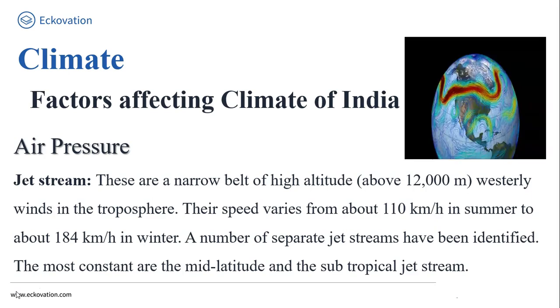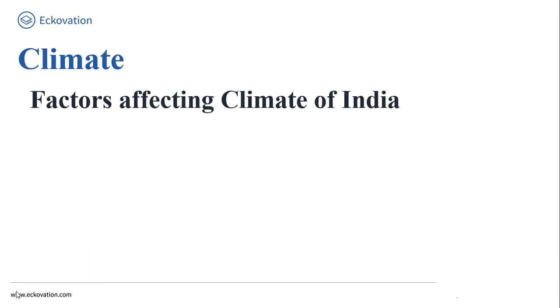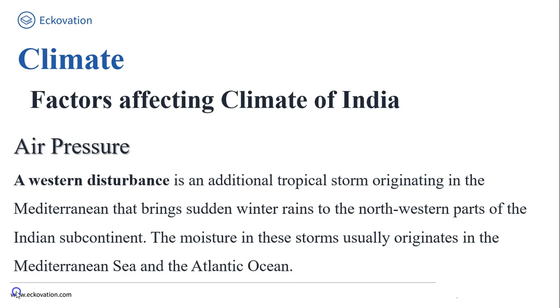In the north and north-western parts of India, a western cyclonic disturbance is brought by the westerly flow. A western disturbance is an extra-tropical storm originating in the Mediterranean that brings sudden winter rain to the north-western part of the Indian subcontinent. The moisture in this storm usually originates in the Mediterranean Sea and the Atlantic Ocean.